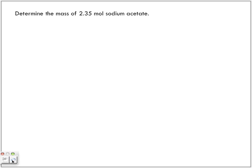Determine the mass of 2.35 moles of sodium acetate. We know we have the number of moles, which is 2.35. We have 2.35 moles of sodium acetate. Sodium acetate, there's the formula, NaCH3COO.